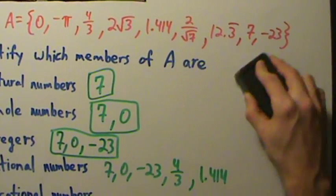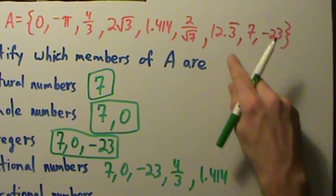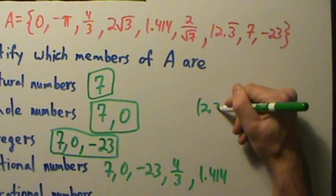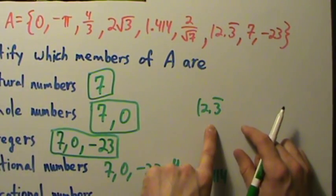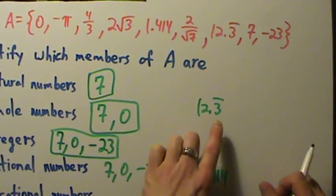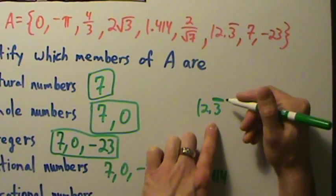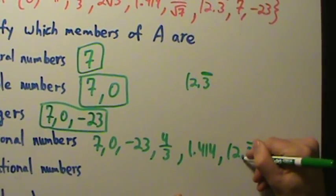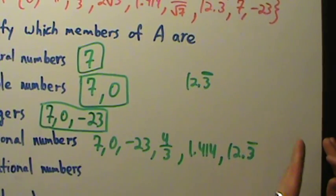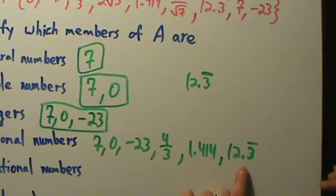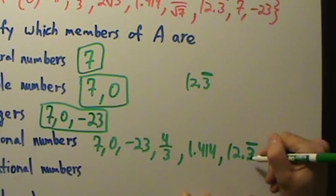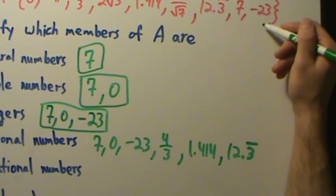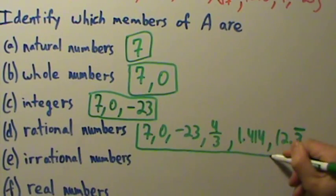How about 12.3 repeating? Yeah — even though the decimal goes on infinitely far after the decimal point, as long as you have this repetition, it's still rational. So 12.3 repeating is another example of a rational number. Just keep that in mind: even if you have infinitely many decimal places, as long as it's repeating, it's still rational. So those are all the rational numbers in set A.